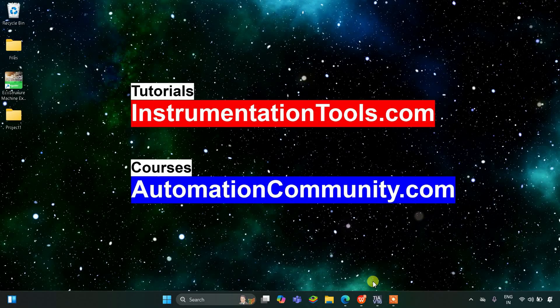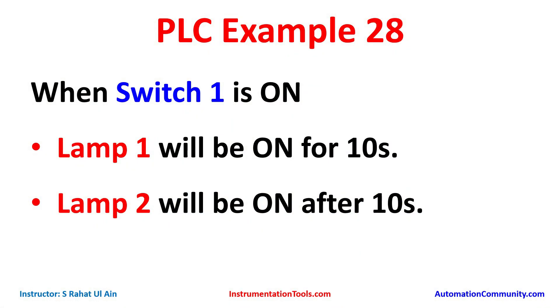Hello everyone, welcome to Automation Community. Today in this video we are going to discuss an example using timers. In example 28, when switch 1 is on, lamp 1 will be on for 10 seconds, and lamp 2 will turn on after 10 seconds.